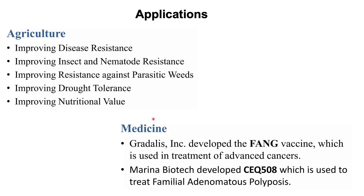shRNA is used in agriculture to improve disease and pest resistance, drought tolerance, and nutritional value. In medicine, a company called Gradalis developed the FANG vaccine used in the treatment of advanced cancers. Another company, Marina Biotech, developed CEQ508 to treat familial adenomatous polyposis — a live attenuated E. coli genetically engineered to produce and deliver beta-catenin shRNA into the mucosa. Familial adenomatous polyposis is a rare inherited cancer predisposition syndrome characterized by hundreds to thousands of precancerous colorectal polyps, and if left untreated, affected individuals develop colon or rectal cancer at a very young age.